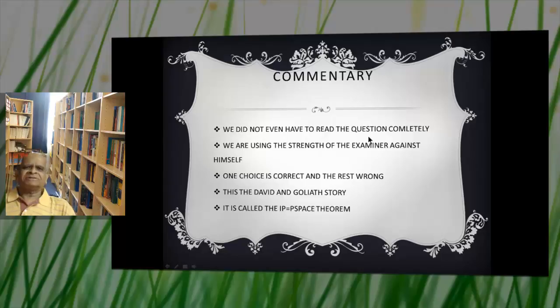We did not even read the question completely. It is the strength of the examiner as he said one choice is correct and the rest are wrong. This is what is called the David and Goliath story. It is called the IP equals PSPACE theorem. If you have something where one is correct and many are wrong, it only takes a polynomial amount of time to solve the problem. To create the problem must have taken an exponential amount of time.